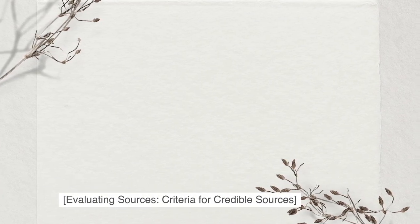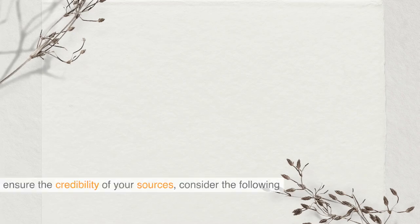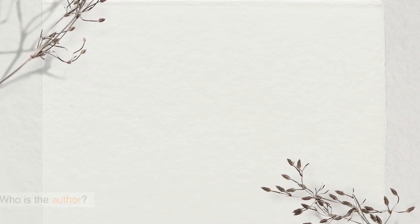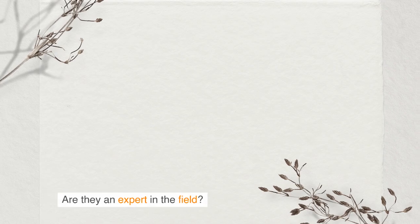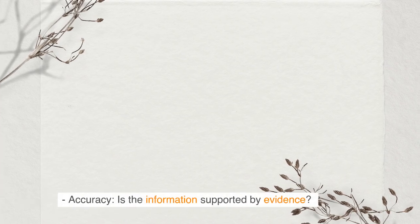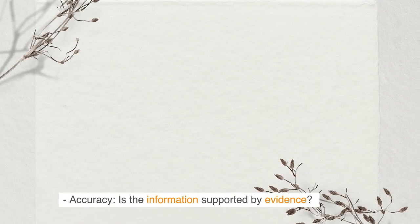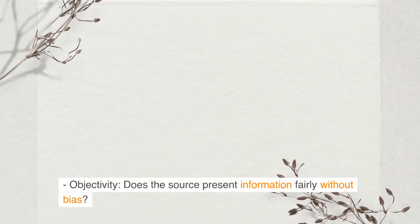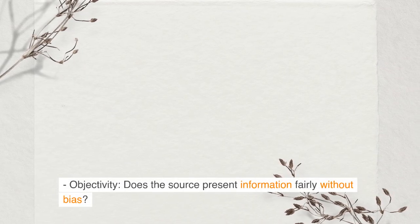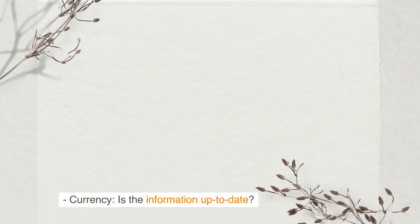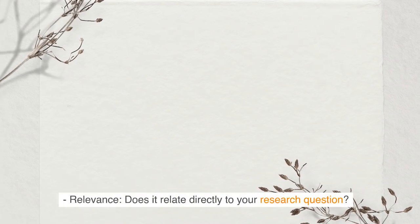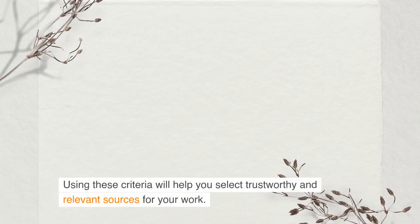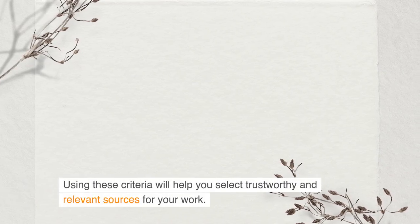Evaluating sources: criteria for credible sources. To ensure the credibility of your sources, consider the following criteria. Authority: who is the author? Are they an expert in the field? Accuracy: is the information supported by evidence? Can it be verified? Objectivity: does the source present information fairly without bias? Currency: is the information up to date? Relevance: does it relate directly to your research question? Using these criteria will help you select trustworthy and relevant sources for your work.